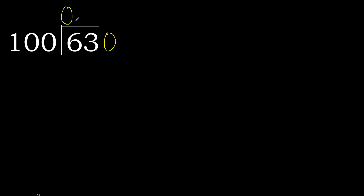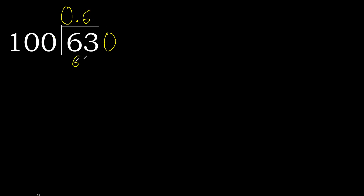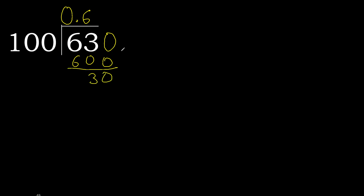Always complete with 0. Here: 0 point. 630 is not less. 100 multiplied by which number is nearest to 630 but not greater? 100 multiplied by 7 is 700 — that is greater. Multiplied by 6 is 600 — ok, that is not greater. Subtract: 30. Next.